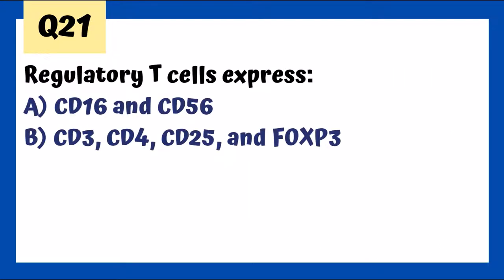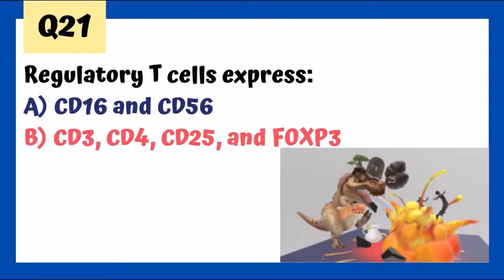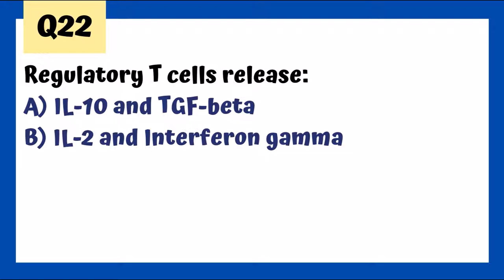Regulatory T-cells express CD3, CD4, CD25, and FOXP3 — not CD16 and CD56. The T-Rex represents Tregs: tree on his head for three, door for four, twin hives for 25 — representing CD3, CD4, CD25 — and foxes in his pouch for FOXP3. Regulatory T-cells release IL-10 and TGF-beta, which are important for suppressing immunity, as opposed to IL-2 which stimulates T-cell growth.